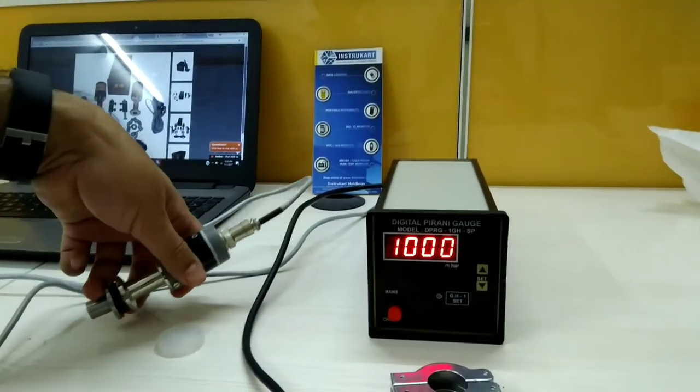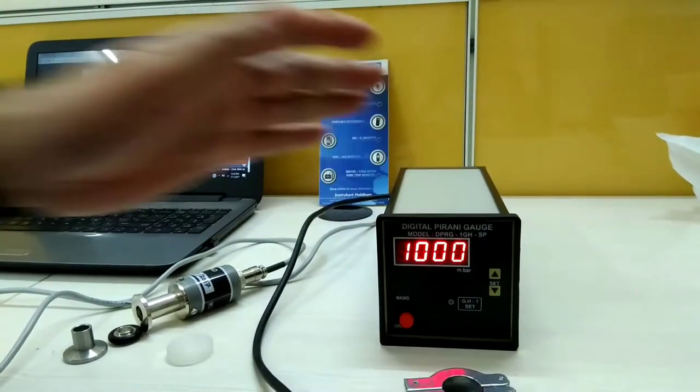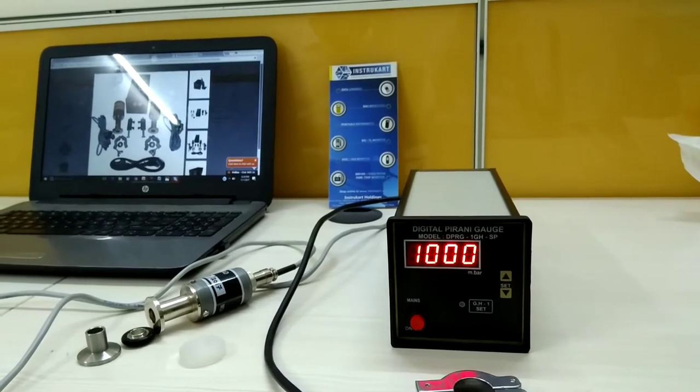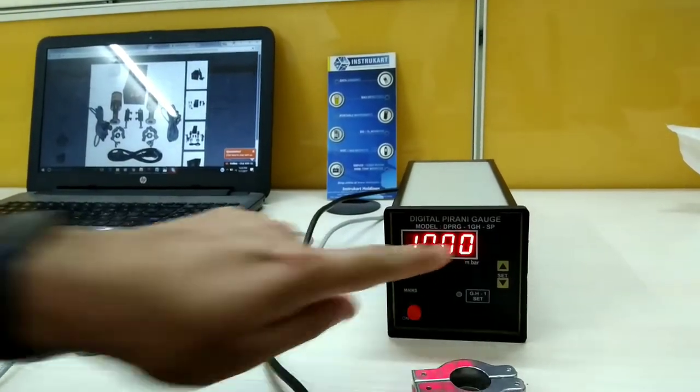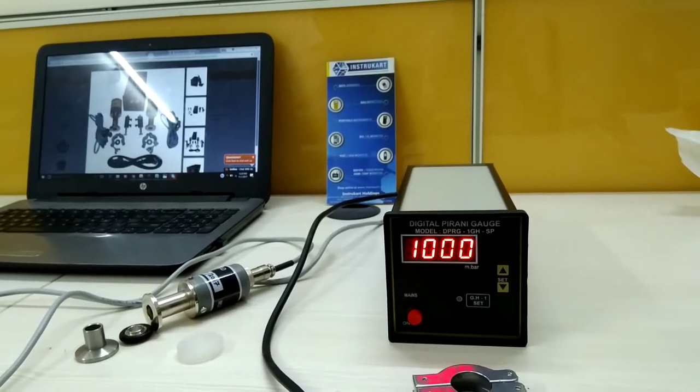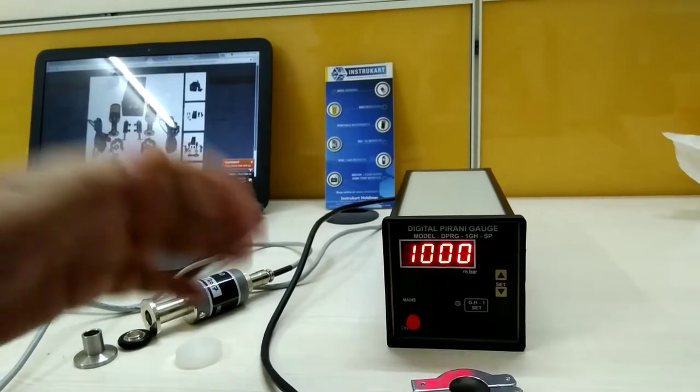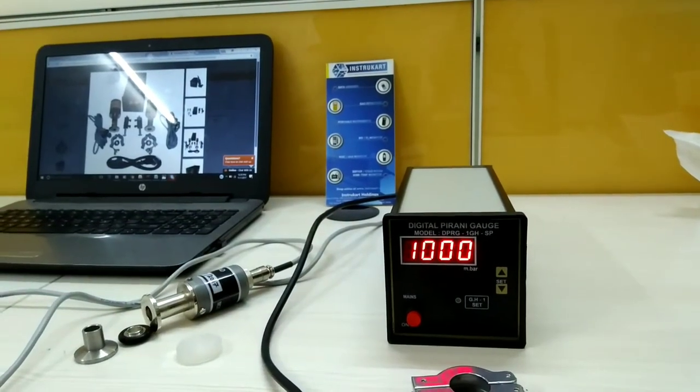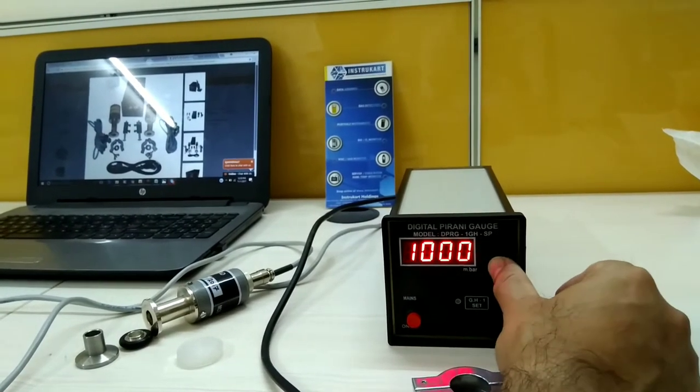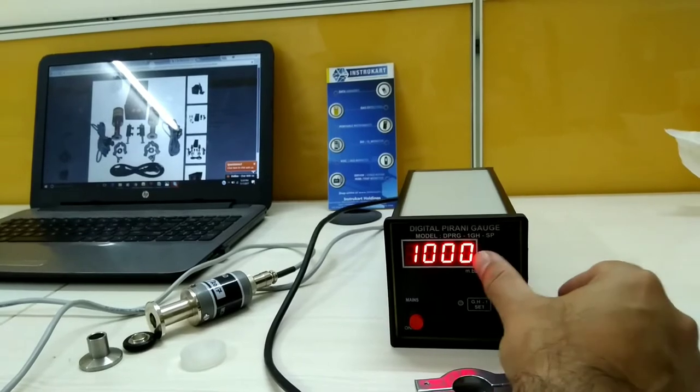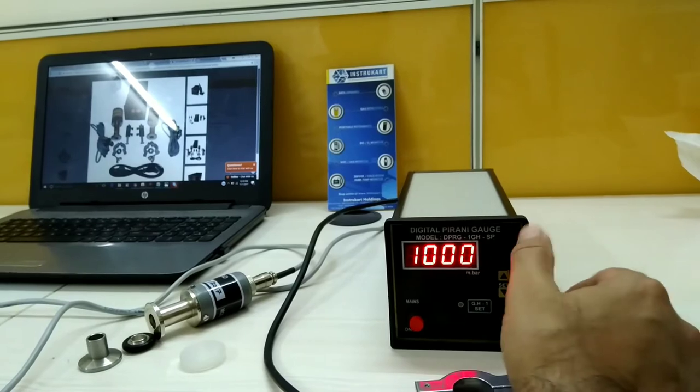The Pirani Gauge Head and Pirani Sensor along with the Pirani Gauge measures from 1000 millibar right up till 0.001 millibar, that is 10 to the power of minus 3 millibars. A traditional Pirani Gauge which you can buy separately would not have a setpoint provision. A setpoint provision is a relay output at any desired vacuum value throughout its range of 1000 millibar to 10 to the power of minus 3 millibar.